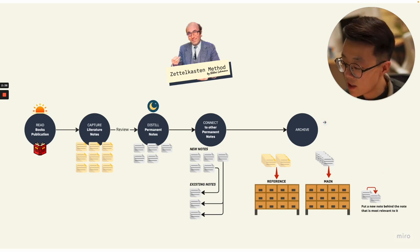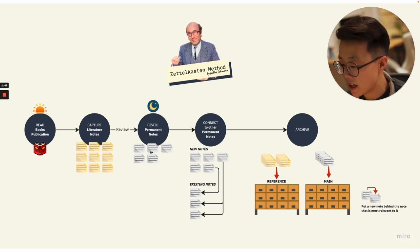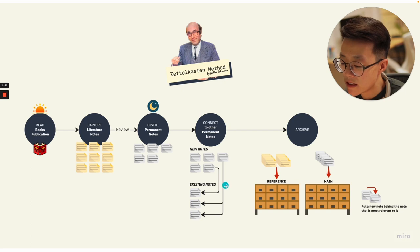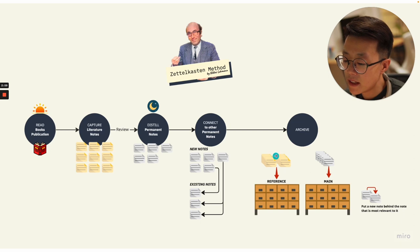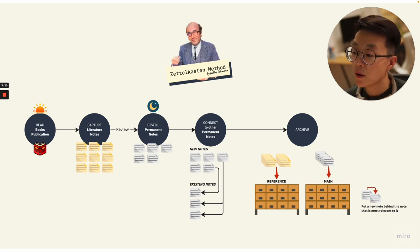As I mentioned in the previous video, Luhmann began his day by reading. During the day he would make literature notes, which would then be transferred into permanent notes at the end of the day. In these permanent notes, he connected them to the existing notes in the Zettelkasten system. Finally, he would archive the literature notes into the referencing system and the permanent notes into the main slip box. The way he sorted the notes was by putting the most related notes close together.